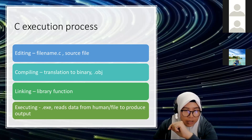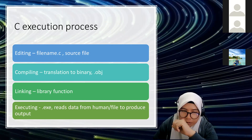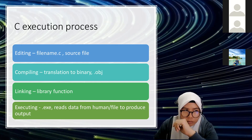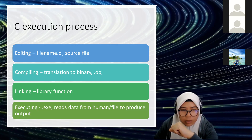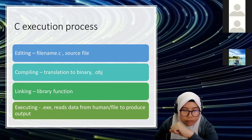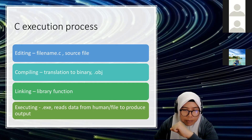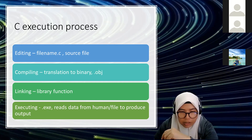Then it will find the linking library functions. The ones we commonly use are math functions — for example, sine, cosine, exponential, logarithm, and any other functions. Input/output also uses library functions. Lastly, executing — it will produce an .exe file. When this exists, it means our file is correct, no problem. We can read input from the user, or read from a saved file, to produce the output. A simple example: at an ATM, when you insert your card and it asks for your PIN — that is an example of user input.